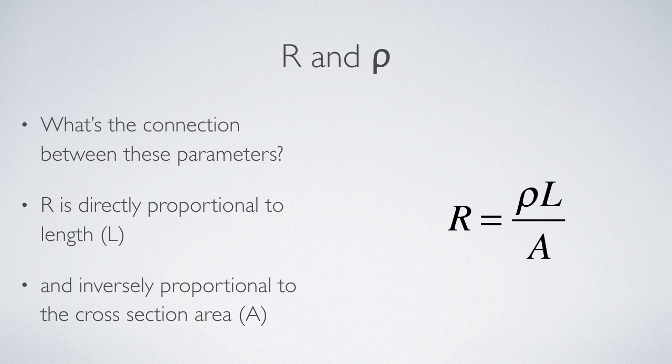If you increase the cross-sectional area, you're decreasing the current density, which means there's less interaction between the charge carriers and the sample.